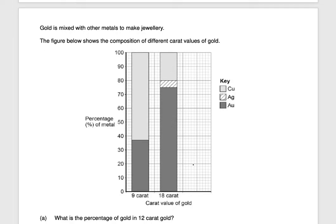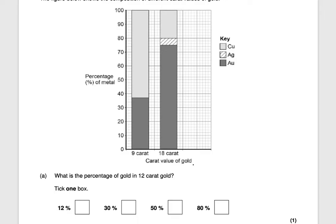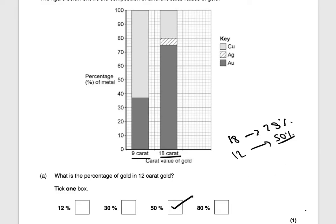Gold is mixed with other metals to make jewellery. The figure shows the composition of different carat values. What is the percentage of gold in 12-carat gold? We have 9-carat and 18-carat data but not 12-carat. In 18-carat gold, 75% is gold. Using the trend, 12-carat gold would contain 50% gold. That's one mark.